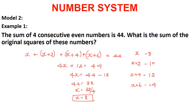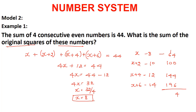Now we need to find the sum of the squares of these numbers: 8² = 64, 10² = 100, 12² = 144, 14² = 196. Taking the sum of all these: 64 + 100 + 144 + 196 = 504. So the sum of the squares of these 4 consecutive even numbers is equal to 504.